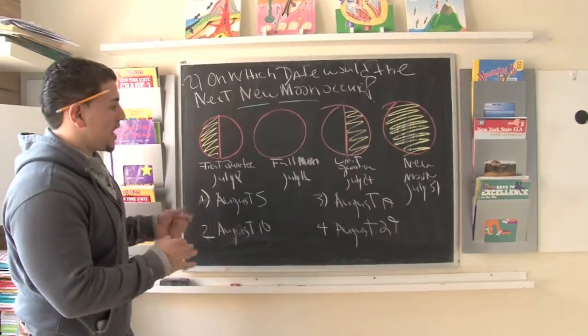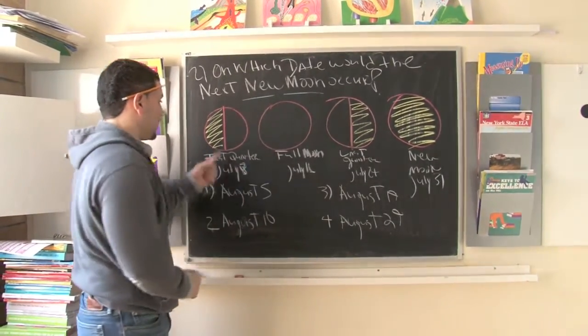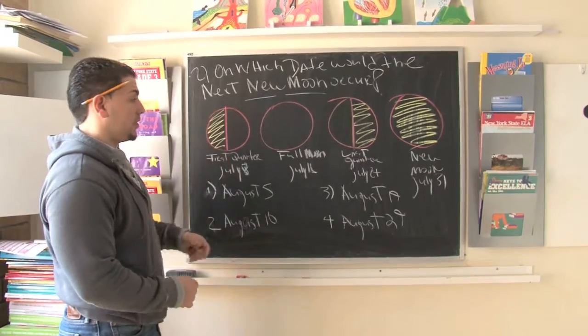But they give us this diagram and it shows us, on the first quarter, it's July 8th. So July 8th is the first quarter. We see half of the moon is exposed.